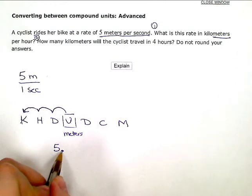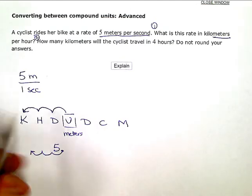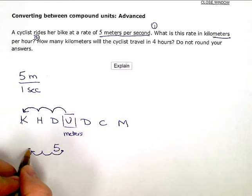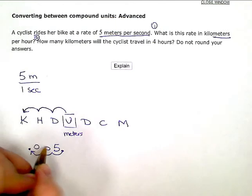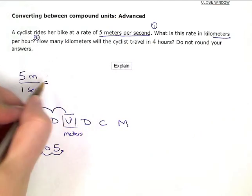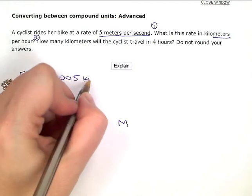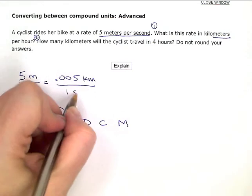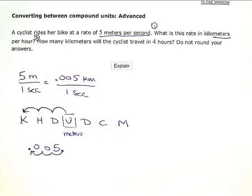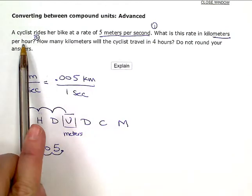I'm going to bump the decimal three places to the left because that's what I had to jump here. So my decimal will now be there and add some zeros. Five meters is the same as 0.005 kilometers every one second. But I'm still not where I need to be. They want kilometers per hour, kilometers per hour.